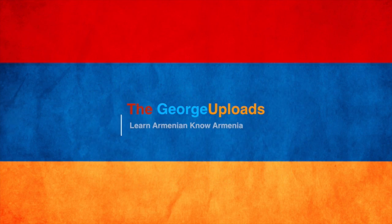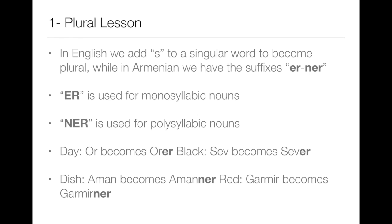Someone asked me to do this tutorial and here it is, enjoy guys. We have plural lessons in English — we add the S to a singular word to make it plural, while in Armenian we have the suffix ER or NER. The ER is used for monosyllabic nouns and the NER is used for polysyllabic nouns.